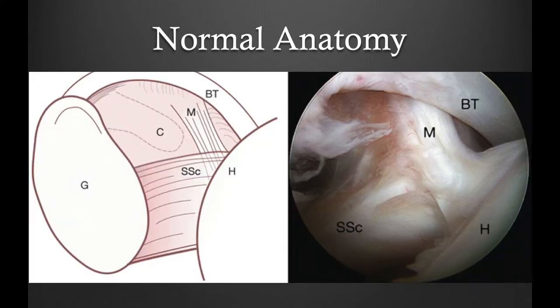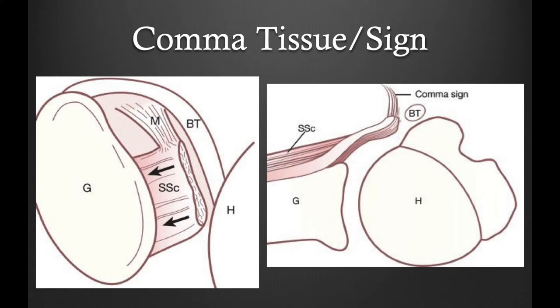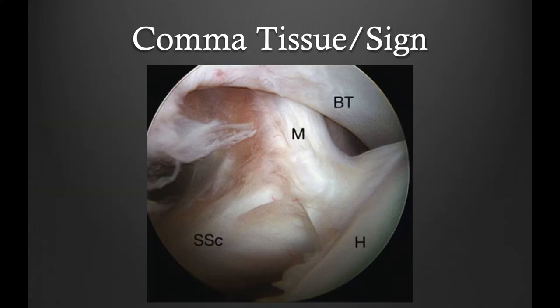This is the normal anatomy of the shoulder which includes the biceps tendon, the medial sling of the biceps, the subscapularis tendon, and the humeral head. The comma tissue is the medial sling of the biceps tendon which forms a comma sign when the subscapularis tears and retracts. This is a demonstration of normal anatomy with the subscapularis tendon inserting on the humeral head. The M represents the comma tissue which is the medial sling of the biceps tendon, which secures the biceps tendon in place and also secures the superior attachment of the subscapularis tendon.